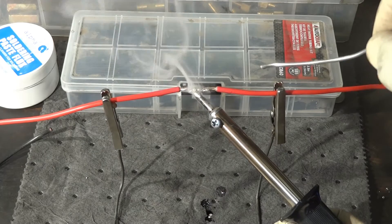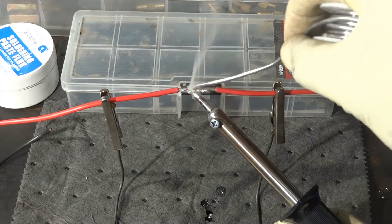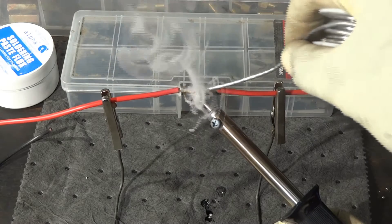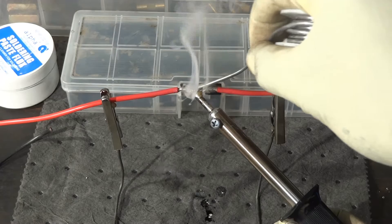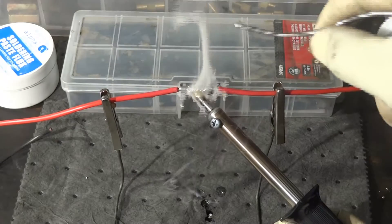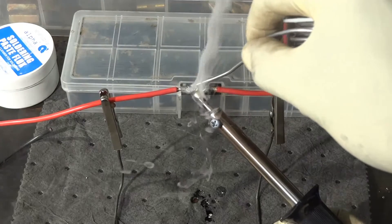After the wire is hot, what you're going to do is you're just going to attach your solder across the area that you're going to be soldering. And as you guys can see, my solder is melting into the wire strands.